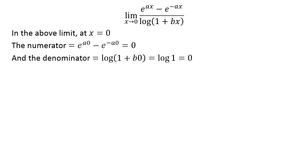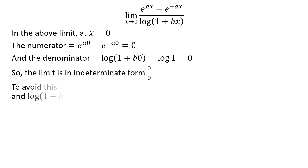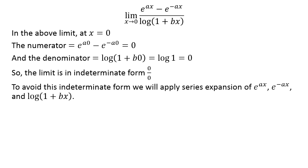At x equal to 0, the numerator is equal to 0 and also the denominator is equal to 0. This implies that the limit is in 0 upon 0 indeterminate form.